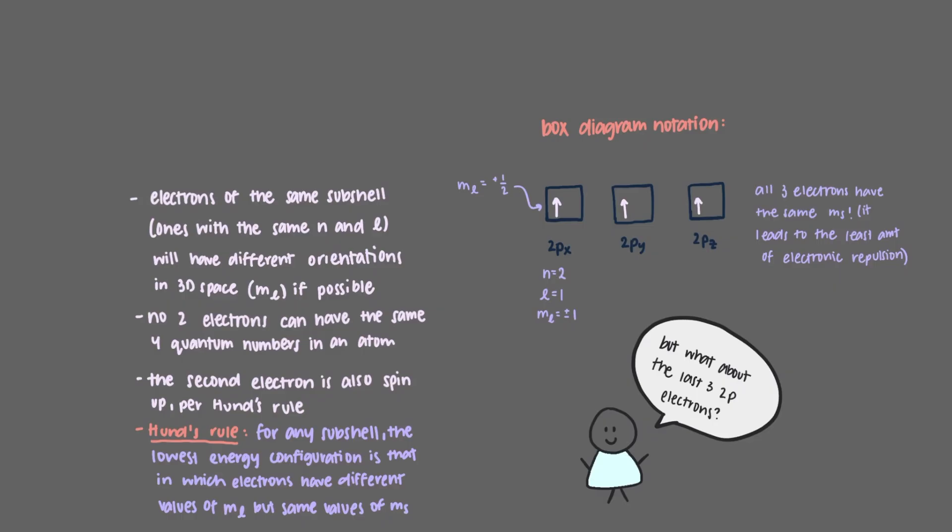But we know that we can have a maximum of 6 2p electrons, so what about the last three? Well, recall that in the bus, once all of the rows were taken up by one person, people had to begin doubling up, and we ended up with two people in each row. The same happens with electrons.